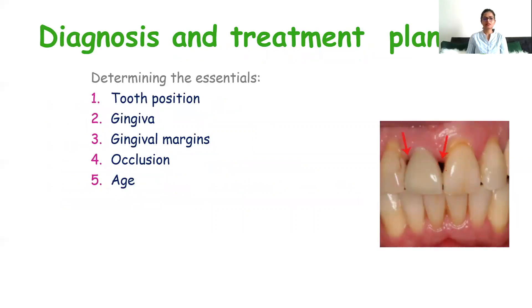Coming on to diagnosis and treatment planning: various predetermining factors play an important role. First is tooth position — improper alignment, rotation, lingual or labial position of the teeth play an important role. The amount of tooth reduction is often related to tooth position. Next is the gingiva — always evaluate the relation of adjacent teeth to soft tissue and bone height to avoid gingival asymmetry and to maintain the height of the interdental papilla, because if not carefully evaluated, the formation of black holes will be unavoidable.